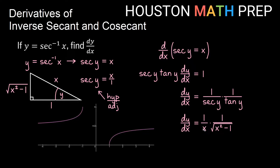To account for that and ensure we always get a positive slope, we put absolute value brackets around the x in the denominator outside of the root. So our actual formula for this derivative is 1 over the absolute value of x times the square root of x squared minus 1.